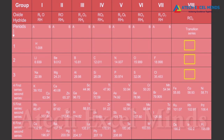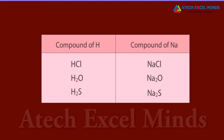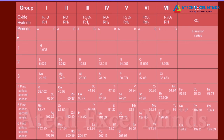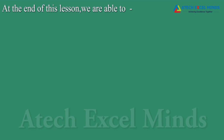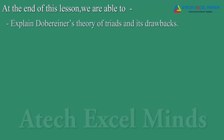One of the strengths of Mendeleev's periodic table was that when noble gases were discovered, they could be placed in a new group without disturbing the existing order. The limitations included: hydrogen has no fixed position as it resembles alkali metals in electronic configuration; isotopes posed a challenge because they have similar chemical properties but different atomic masses; and the atomic masses do not increase in a regular manner, making it impossible to predict how many elements could be discovered between two known elements.